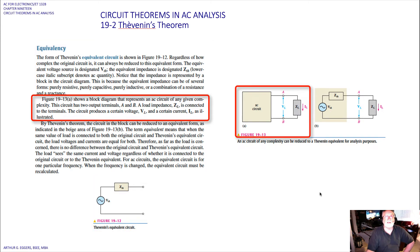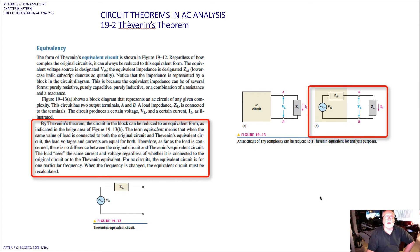The block diagram represents an AC circuit of a given complexity. This circuit has two output terminals A and B. A load impedance Z_load is connected to the terminals. The circuit produces a certain voltage Z_load and a certain current I_load. As illustrated by Thevenin's theorem, the circuit in the block can be reduced to an equivalent form as indicated in the beige area.